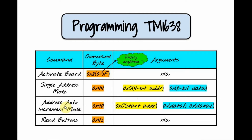To send data to multiple devices, we use the Address Auto Increment Mode command, with a command byte value of 0x40. After sending this byte, we send the address of the first device and then its data. The next data sent will automatically go to the next device, as the address is automatically incremented. This feature is useful for resetting all LEDs and 7-segment displays before sending any data.